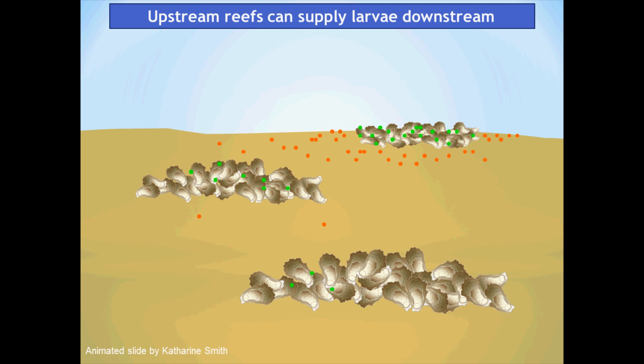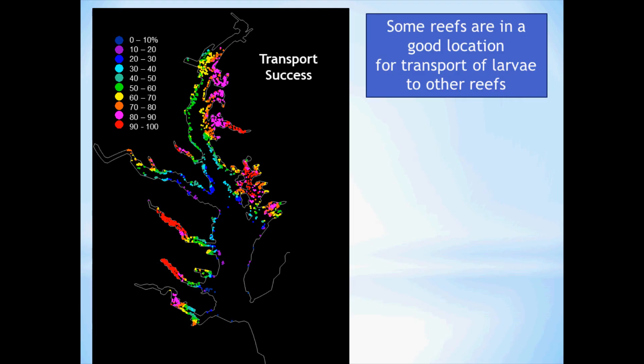We can use computer simulations to estimate transport success throughout Chesapeake Bay. The results indicate that some reefs are in a good location for transport of larvae to other reefs. In this image, reefs color-coded orange, pink, and red have high transport success scores, indicating that 70 to 100% of the larvae released from these reefs could encounter another reef to settle on — if they don't die of predation, disease, or starvation first.